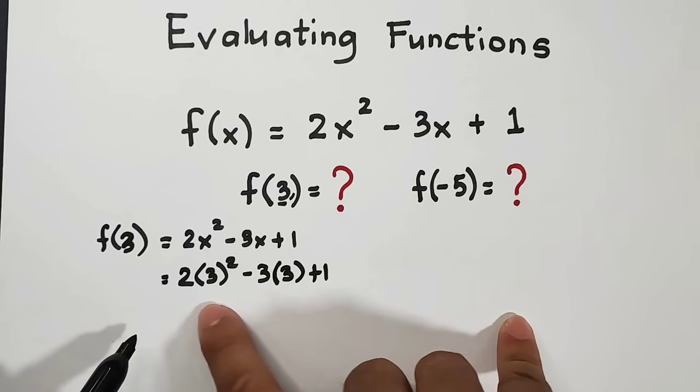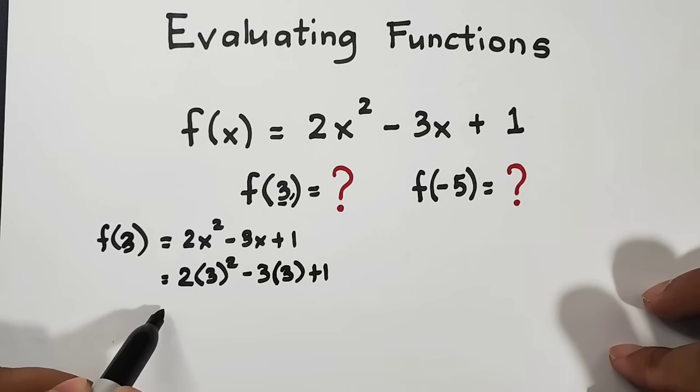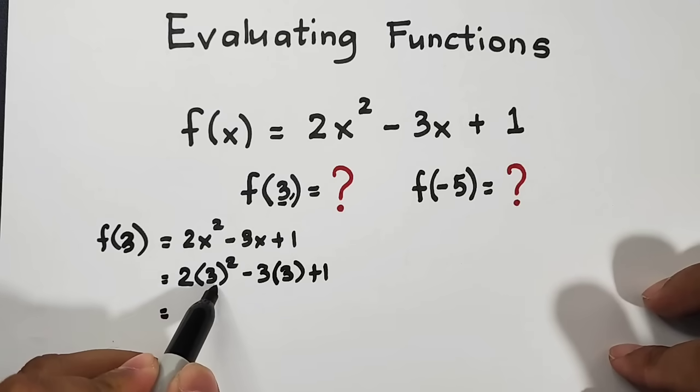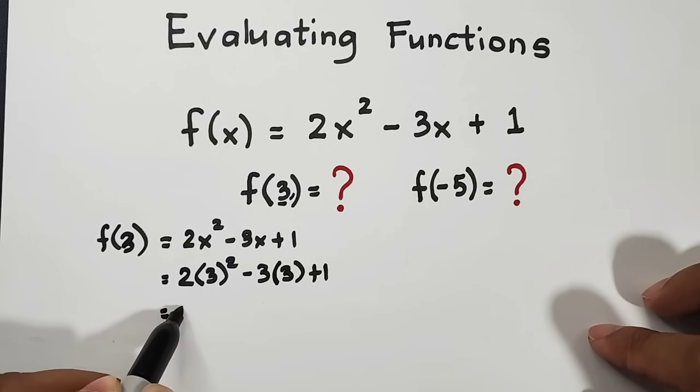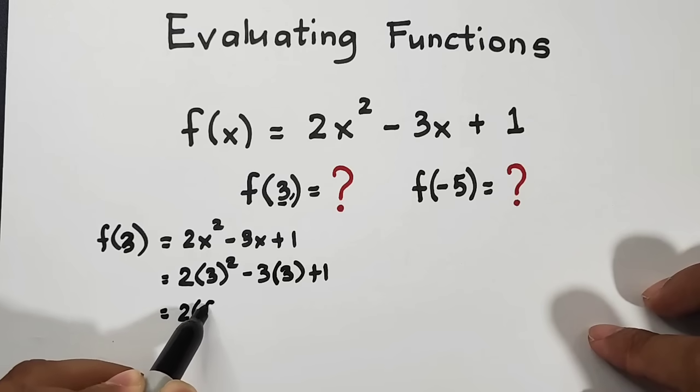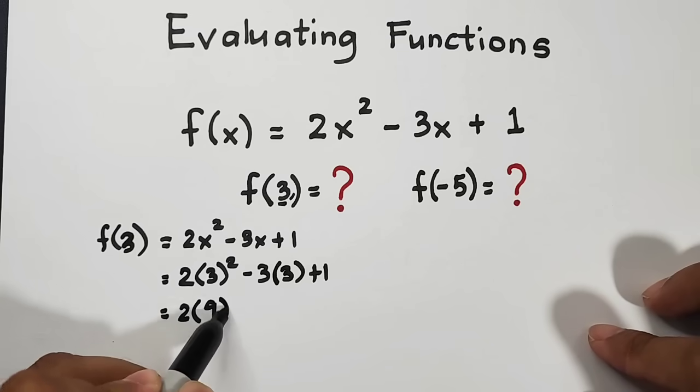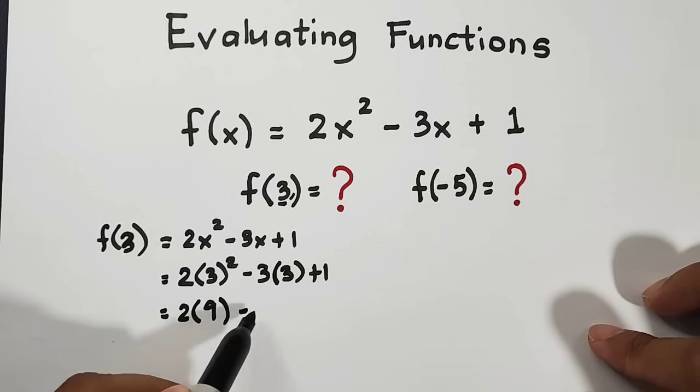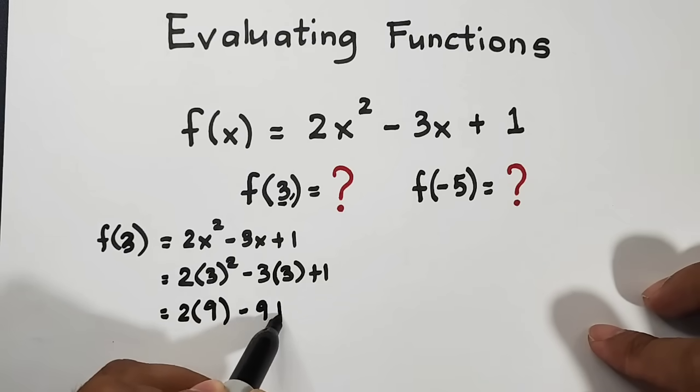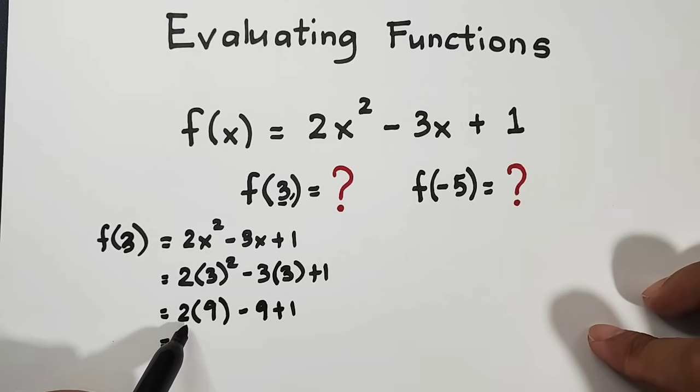All you need to do is to simplify this one using PEMDAS. So let's start. 3 squared is equal to 9, so that will be 2 times 9. Then negative 3 times 3, that is negative 9 plus 1. Simplifying this given sequence, 2 times 9 is equal to 18.